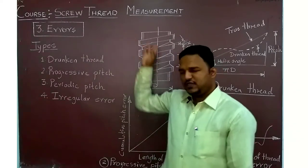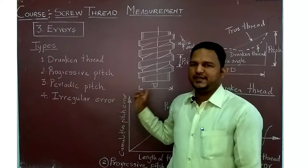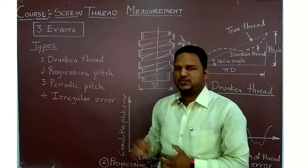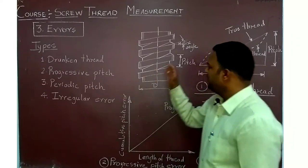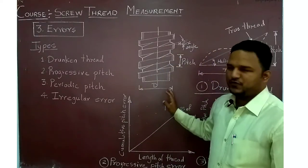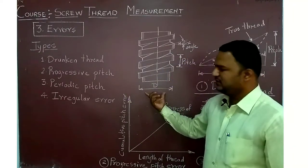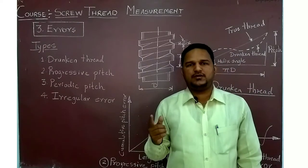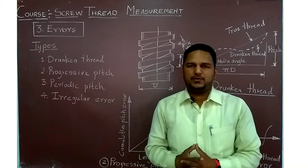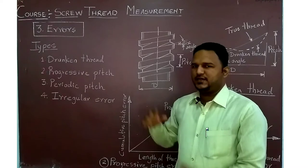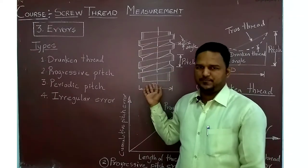An error in any of these 5 parameters will lead to the failure of the screw thread. That is why it is very important to understand errors in the screw thread profile. Looking at the diameters — major diameter, minor diameter, and effective diameter — any errors in these will cause weakening of the thread.